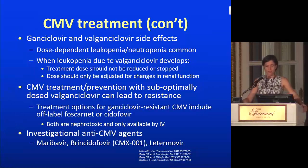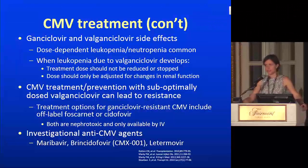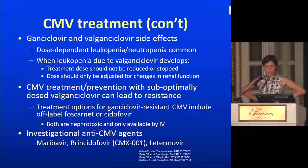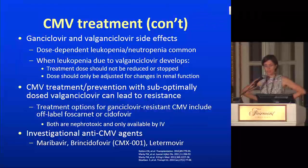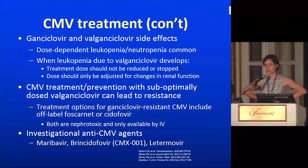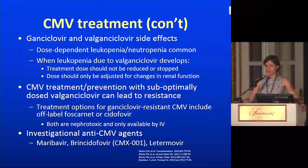When you give suboptimally dosed valganciclovir, a patient can occasionally develop resistant CMV, and when that happens it's kind of a disaster because we don't have good treatment alternatives. Available alternatives include foscarnet and cidofovir, neither of which are appealing for the renal transplant patient — foscarnet causes serious electrolyte abnormalities requiring inpatient management, and cidofovir is quite nephrotoxic. There are investigational agents including maribavir, brincidofovir, and letermovir. Maribavir and brincidofovir both failed in prophylaxis trials in stem cell transplant patients. Letermovir is still in clinical trials.